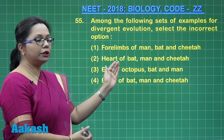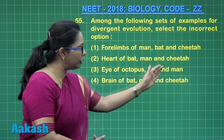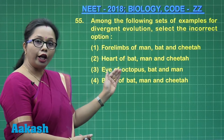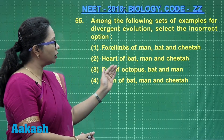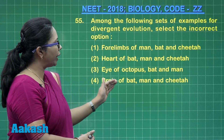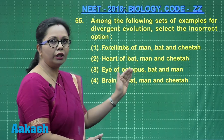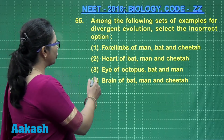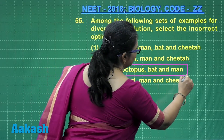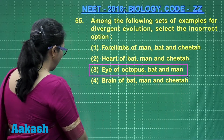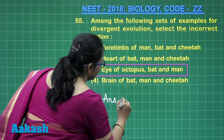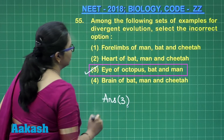The eye of an octopus compared with the eye of mammals are analogous structures because they have different retinal positions. So this is the odd one out. The fourth choice — brain of bat, man, and cheetah — is again homologous. Therefore, the incorrect option with respect to divergent evolution is option 3, which is the correct answer.